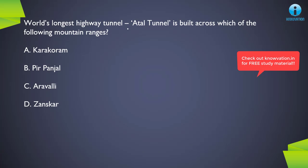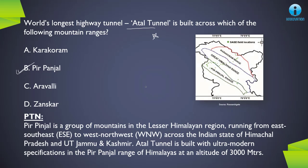Next question: the world's longest highway tunnel, Atal Tunnel, is built across which of the following mountain ranges? This is a mix of current affairs and static GK. The correct answer is B, Pir Panjal. Pir Panjal is a group of mountains in the lesser Himalayan region running from east-southeast to west-northwest across Himachal Pradesh and Jammu and Kashmir. The Atal Tunnel is built to ultra-modern specifications in the Pir Panjal range of the Himalayas at an altitude of around 3,000 meters. Please remember the Pir Panjal range.